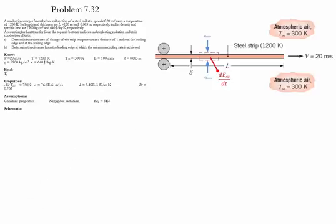The next step is to determine the distance from the leading edge at which the minimum cooling rate is achieved. The minimum cooling rate will occur just before the transition from laminar to turbulent flow takes place. Therefore, we set the Reynolds number equal to 5 times 10 to the 5. Knowing the velocity and the kinematic viscosity, we can solve for x and find that the value of x is approximately 1.91 meters. This is the location at which the minimum cooling rate is achieved.